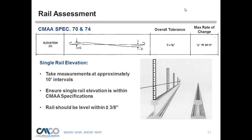For rail assessment specifications, we look at CMAA Spec 70 and 74. Starting with a single rail evaluation, you want to take measurements at approximately every 10-foot interval. Ensure rail elevation is within CMAA specifications — rails should be level within plus or minus three-eighths of an inch, and the maximum rate of change is a quarter-inch per every 20 feet.